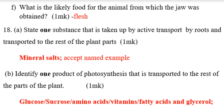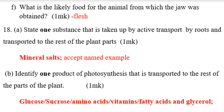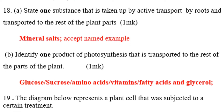Question number 18: state one substance that is taken by active transport by roots and transported to the rest of the plant body parts. That substance is mineral salts. Also identify one product of photosynthesis that is transported to the rest of the plant parts — that is glucose, also called sucrose.